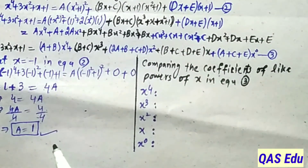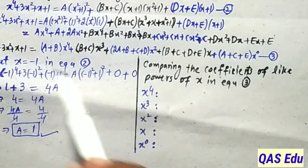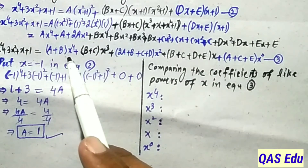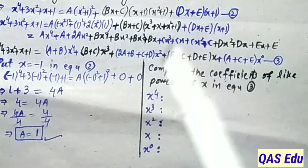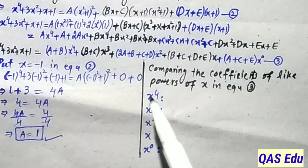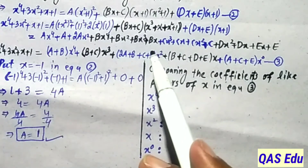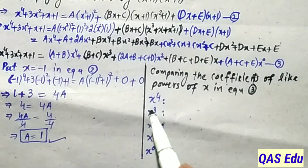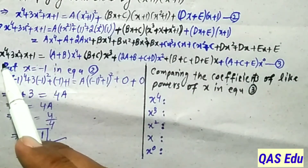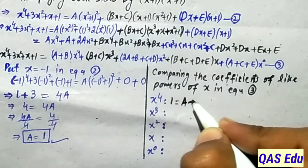For the remaining constants B, C, D, E we use comparing the coefficients of like powers of x in equation number 3. The powers are x⁴, x³, x², x¹, x⁰, giving five equations for five constants A, B, C, D, E. Comparing x⁴ coefficients: left side = 1, right side = A + B. This is equation number 1 (A + B = 1).